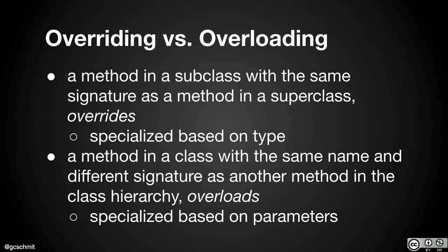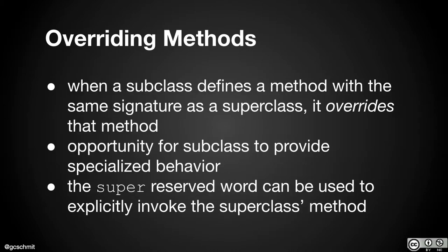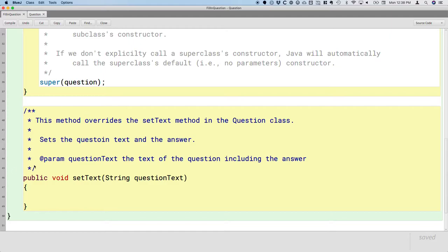As a concrete example of method overloading: the ArrayList class has an add method that takes one parameter (the object to add), and also an overloaded version with two parameters (the index and the element). That's overloading — two different ways to call add. What we're doing here is overriding: changing the behavior of setText when invoked on a FillInQuestion object. It's easy to accidentally overload when you mean to override if you're not careful about the parameter types.